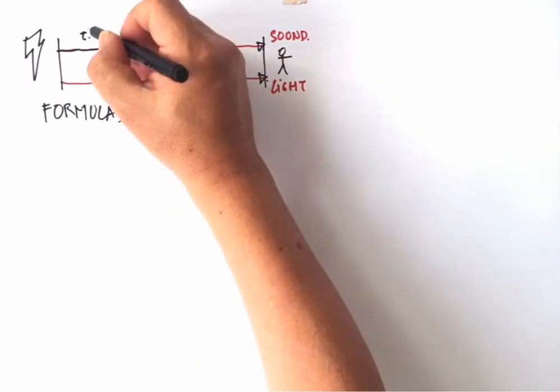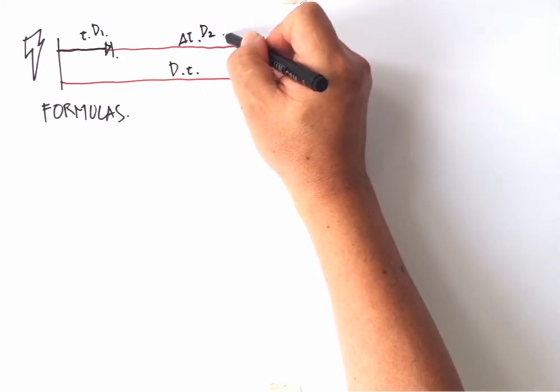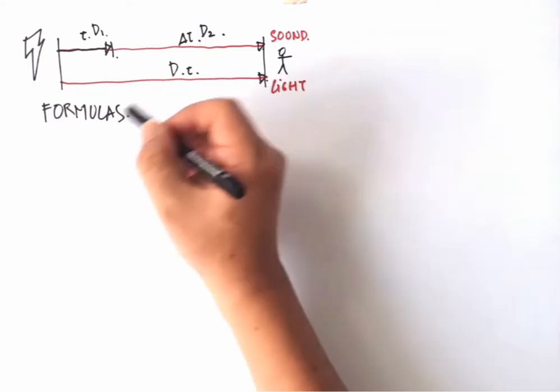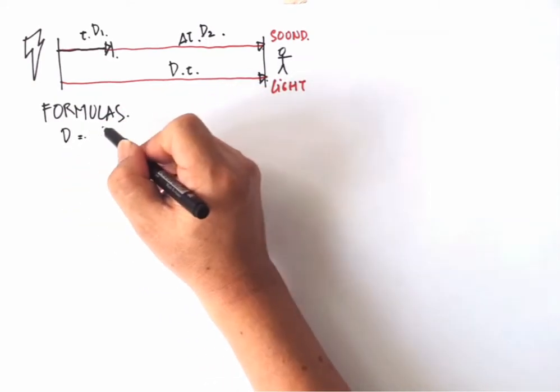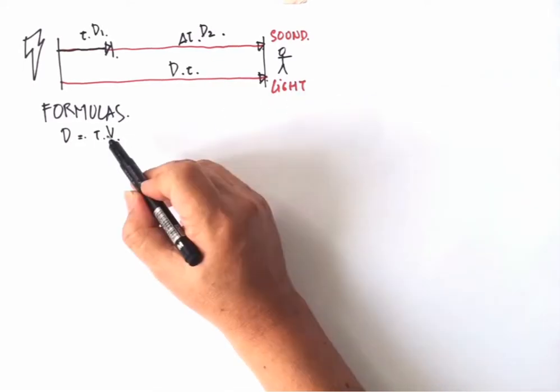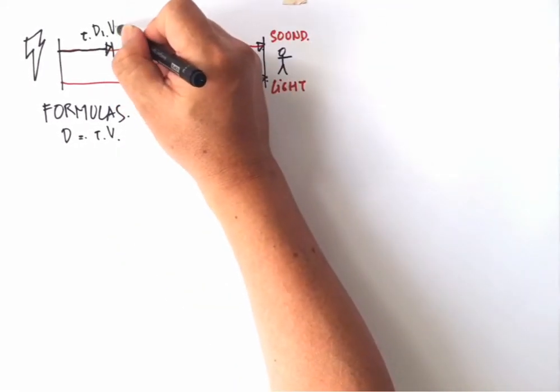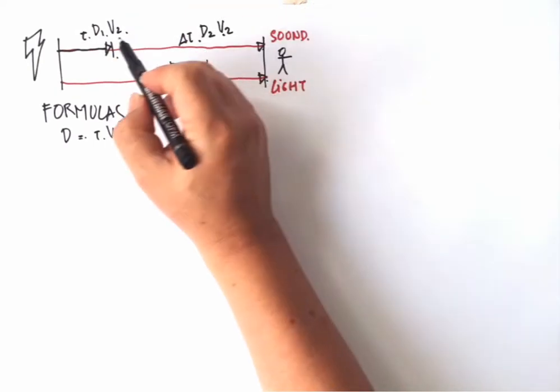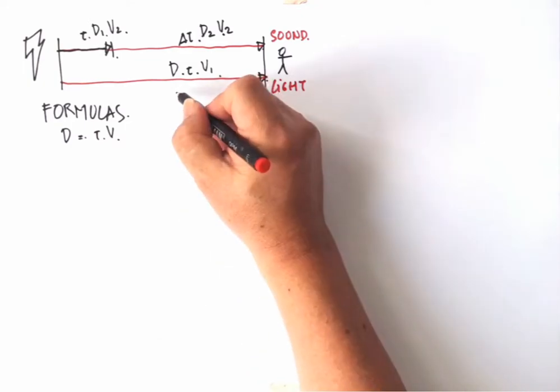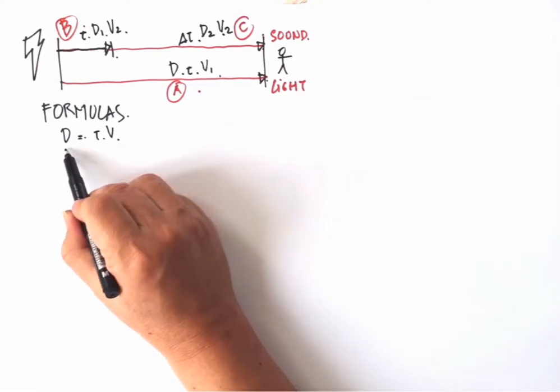Then let us name this as D1 and this distance as D2. What is the basic formula here? Of course it will be distance equal to time multiplied by velocity. We have two different velocities here. Let us denote the light velocity as V1 and V2 as sound velocity. V2 here also the same velocity along this line. Completing this, now let us name this section as A section, this as B section, and this as C section.